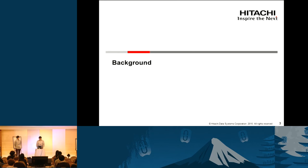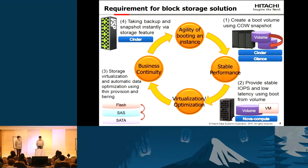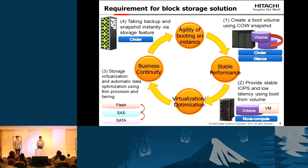Let's move on to the background. Applying block storage strategy for the OpenStack cloud environment, we think there are four key requirements: agility of booting instances, stable performance, virtualization and optimization, and business continuity. As for the agility of booting instances, using the Copy-on-Write snapshot feature enables new instances with volume booting rapidly without massive data copy via network from the Glance backend.